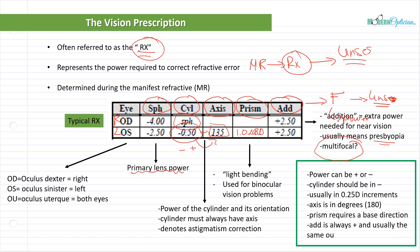We opticians always deal with minus cylinders, so if a cylinder is written as plus you'll need to convert it through a process called transposition, which we'll cover. Everything is usually in quarter diopter increments: 0 (plano), 0.25, 0.50, 0.75, 1.00, and so on. Sometimes you can have eighth diopter increments — 0.125, 0.375, 0.875 — and while optometrists used to prescribe in eighth diopters more frequently, you rarely see it now.